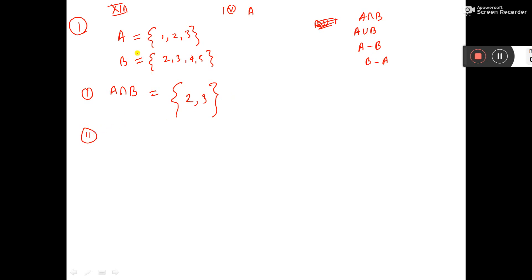Now part 2, how to write? So A union B, to write A union B, write all the elements of A. That is 1, 2, 3.